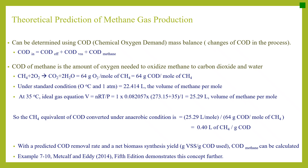So the CH₄ equivalent of COD converted under anaerobic conditions is 25.29 L/mol divided by 64 g COD/mol of CH₄, which equals 0.4 litres of CH₄ per gram of COD. With a given amount of COD in, and if we can predict the COD removal rate and net biomass synthesis yield, we can use this theoretical ratio of 0.4 L CH₄ per gram of COD to predict the amount of methane gas produced. The example in Metcalf and Eddy 2013, 5th edition, page 710, illustrates this problem further.